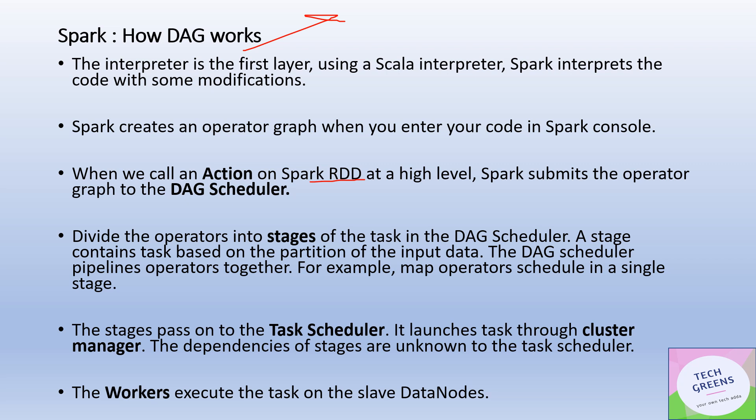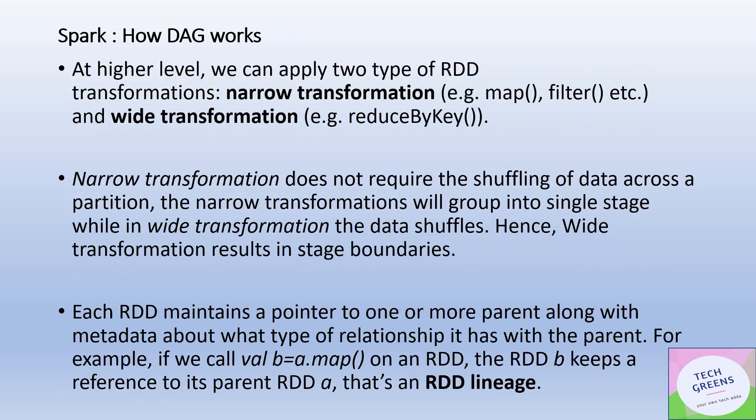These stages are sent to the worker nodes for execution through the task scheduler. At a high level, two kinds of operations or transformations are applied on the RDD, and based on the kind of transformation, the stage boundaries are defined. All narrow transformation tasks would be combined into a single stage.